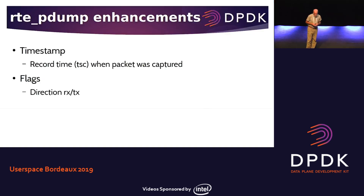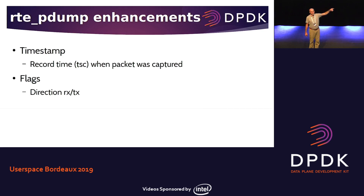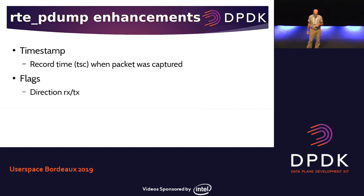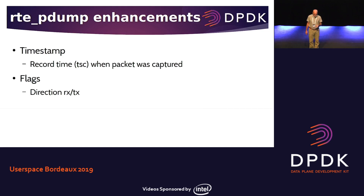After doing the first version, there are some things to add to pdump. The first is timestamps: the existing pdump application timestamps when it sees the packet at the other end of the ring. Hardware timestamps would be ideal, but there are no consistent hardware timestamps in DPDK. So for now, this application puts a timestamp when it puts packets in the ring. The direction flag was also missing, so an mbuf metadata field was used to indicate which direction the packet was coming from. These are two small things that will be pushed upstream.